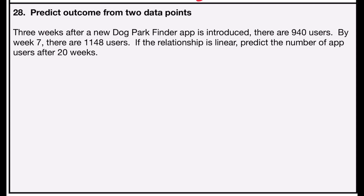Problem number 28 also asks us to predict an outcome from two data points. Three weeks after a new dog park finder app is introduced there are 940 users; by week seven there are 1148 users. If the relationship is linear, predict the number of app users after 20 weeks. Our two data points are (3, 940) and (7, 1148).